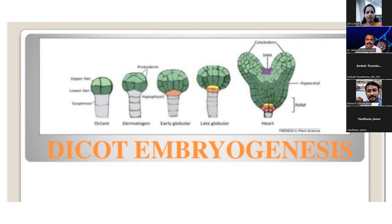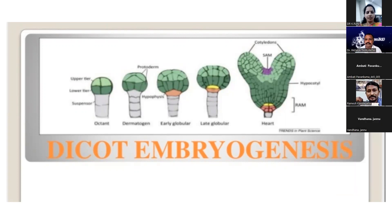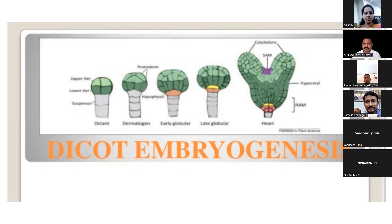The pollen grains are also known as — spores, exogenous spores, microspores, or gametes? The pollen grains are also known as microspores. Pollen grain is a representation of the male gametophyte, so that is the microspore.